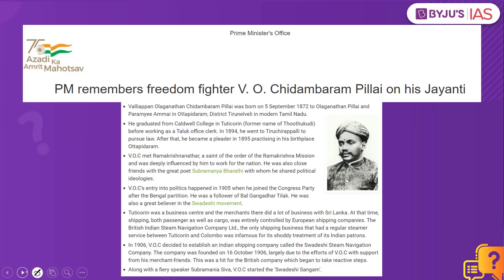We have taken this practice question because this article makes a mention of Chidambaram Pillai. There are some important factual data to remember from the preliminary examination point of view. He was born in 1872 in Tamil Nadu. In 1894, he went to Tiruchurapalli to pursue law. He was close friends with the great poet Subramanya Bharati and shared similar political ideologies. He was a follower of Bal Gangadhar Tilak and a great believer in the Swadeshi movement. In 1906, he established the Swadeshi Steam Navigation Company.